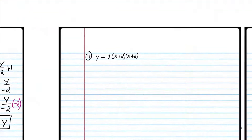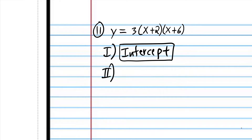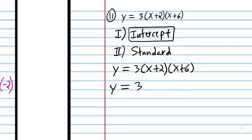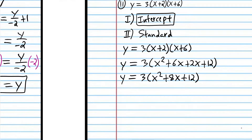We're back. First we're going to identify the form — intercept form, and I'm going to rectangle that. Now we're going to convert to standard form. I'll rewrite the expression, keeping the 3 out there, and use FOIL: x times x is x squared, x times 6 is 6x, 2 times x is 2x, and 2 times 6 is 12. Combining like terms: 6x plus 2x is 8x. Then: 3 times x squared is 3x squared, 3 times 8x is 24x, and 3 times 12 is 36. So we're now in standard form.